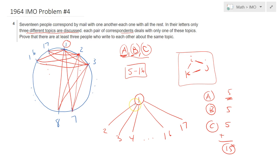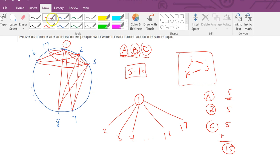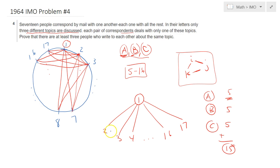So therefore person 1 is discussing at least one topic with 6 people. So let those 6 people without loss of generality be persons 2, 3, 4, 5, 6 and 7. So person 1 is discussing with these 6 people, let's say without loss of generality, topic A.